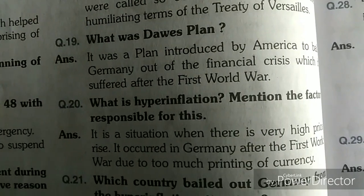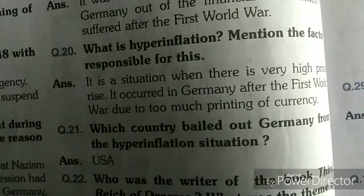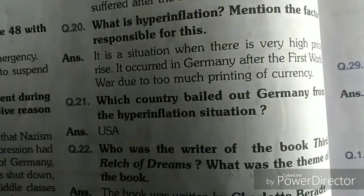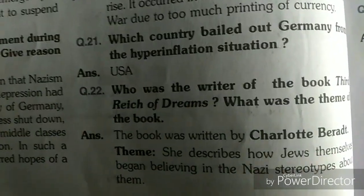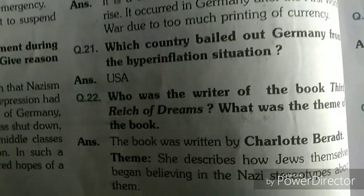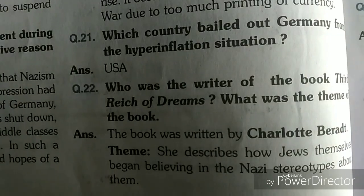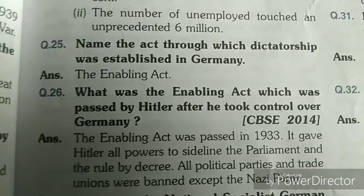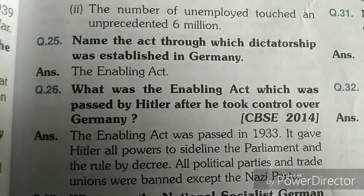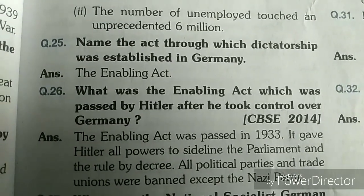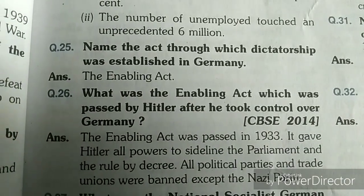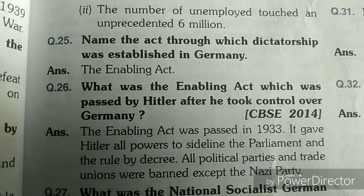Hyperinflation is very important — the 20th question — don't skip it. Which country bailed out Germany from the hyperinflation situation? It's the USA, so that's a very important point. Also important is the question about the book. If you see questions 25 and 26, you would notice that questions on the Enabling Act are being asked in various forms, which itself describes the importance of this topic.